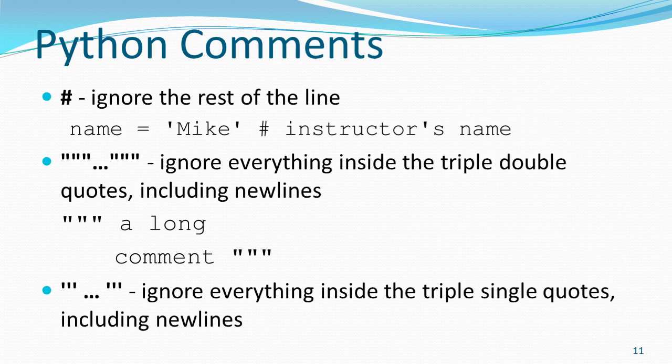Let's review Python comments. A pound symbol means ignore the rest of the line — a great place for a one-line comment at the end of a line of code, especially if you're doing something a little unusual. Triple double quotes mean ignore everything until you find the next triple double quote, so it's a great way to comment sections of code. You can also use triple single quotes.